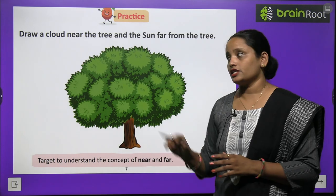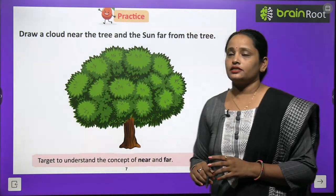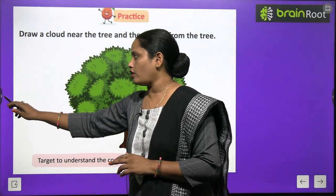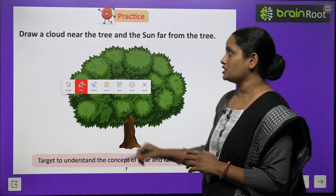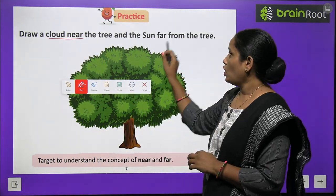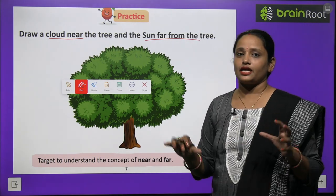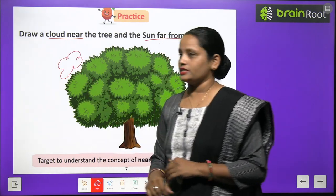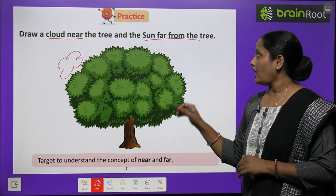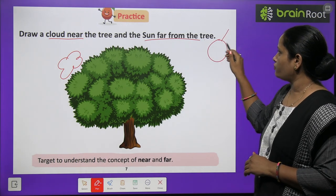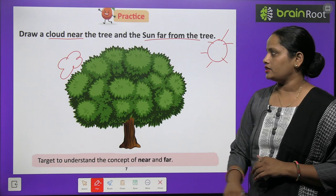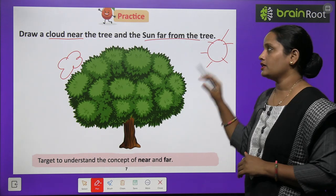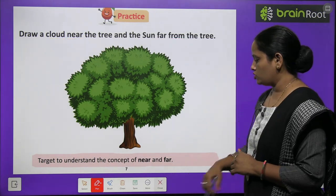Now let's do this exercise — draw a cloud near the tree and a sun far from the tree. Toh humein kya karna hai, tree ke paas mein, near, ek cloud banana hai aur door mein ek sun banana hai. So this is the cloud which is near the tree and here is the sun which is far away from the tree. So like this you have to draw here.